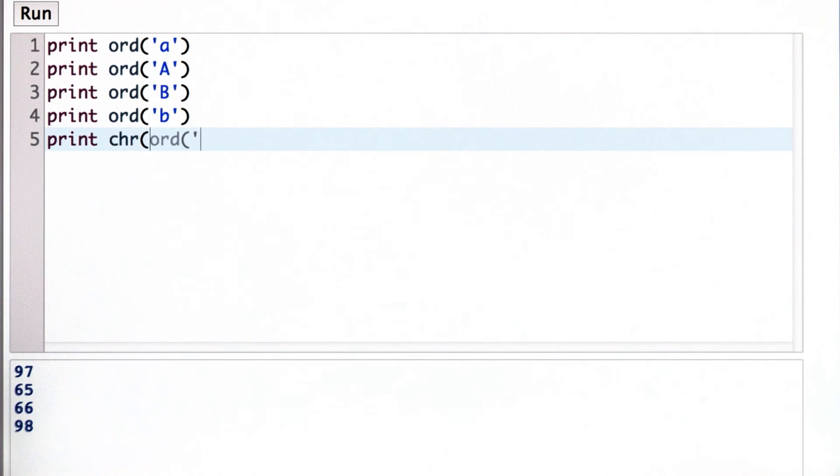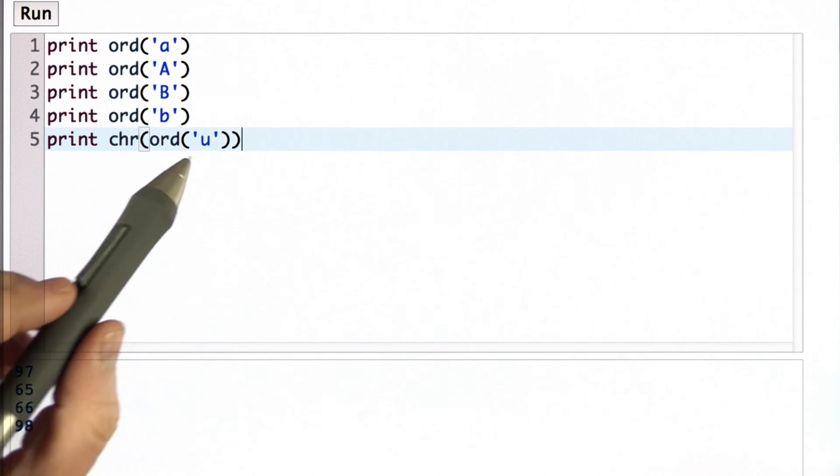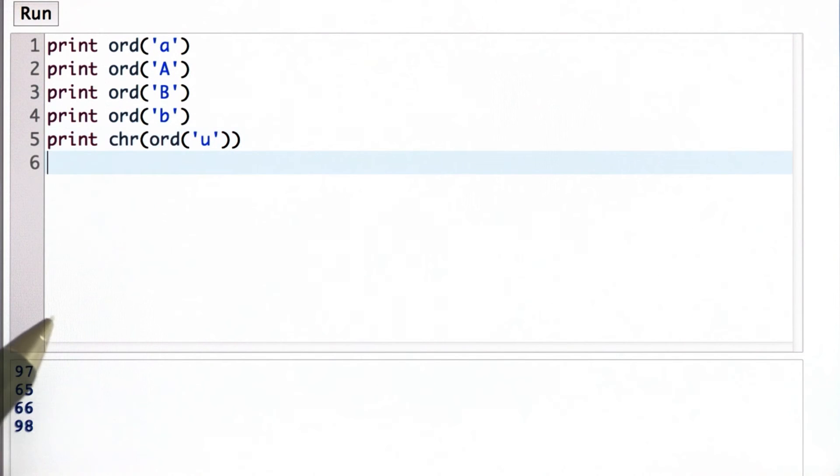And just to show that they are inverses, if we do ord of u and then chr of that, what we get back is the single-letter string u that we started with.